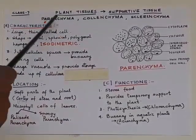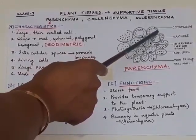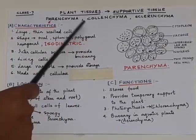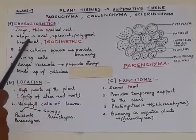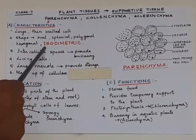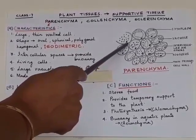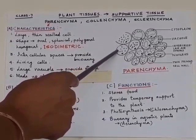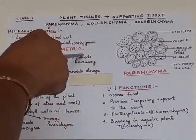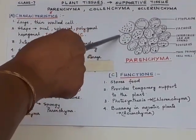The characteristics of parenchyma: as you see in this diagram, parenchymatic cells are large and thin-walled. Their shape may be oval, spherical, polygonal, or hexagonal, but whatever the shape may be, they are all isodiametric. Isodiametric means they are all of the same diameter all around — iso means same, diametric means diameter.